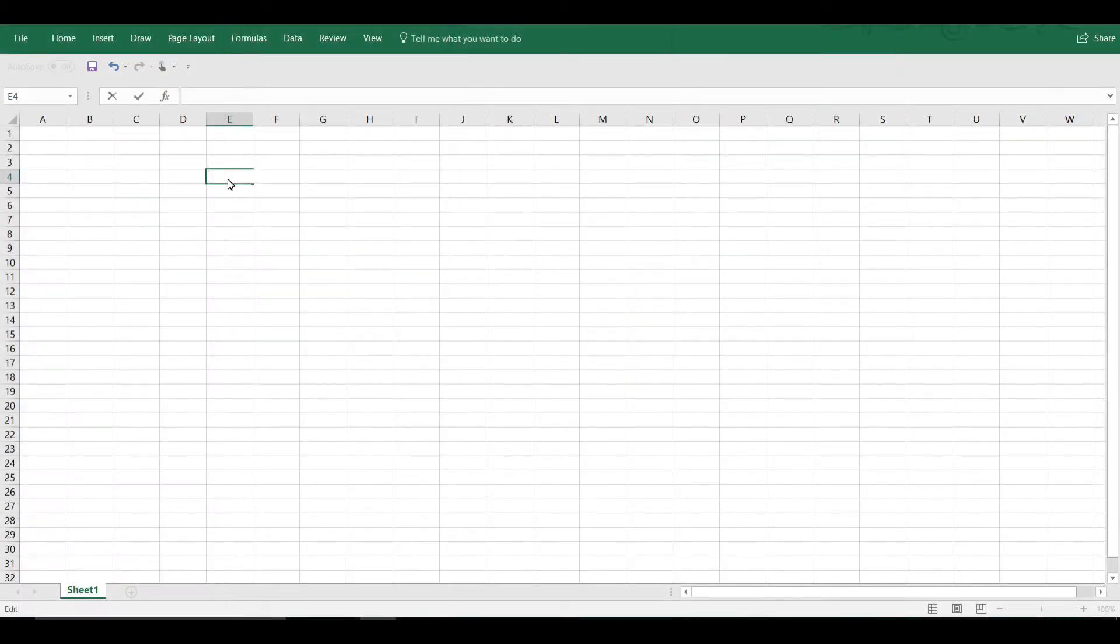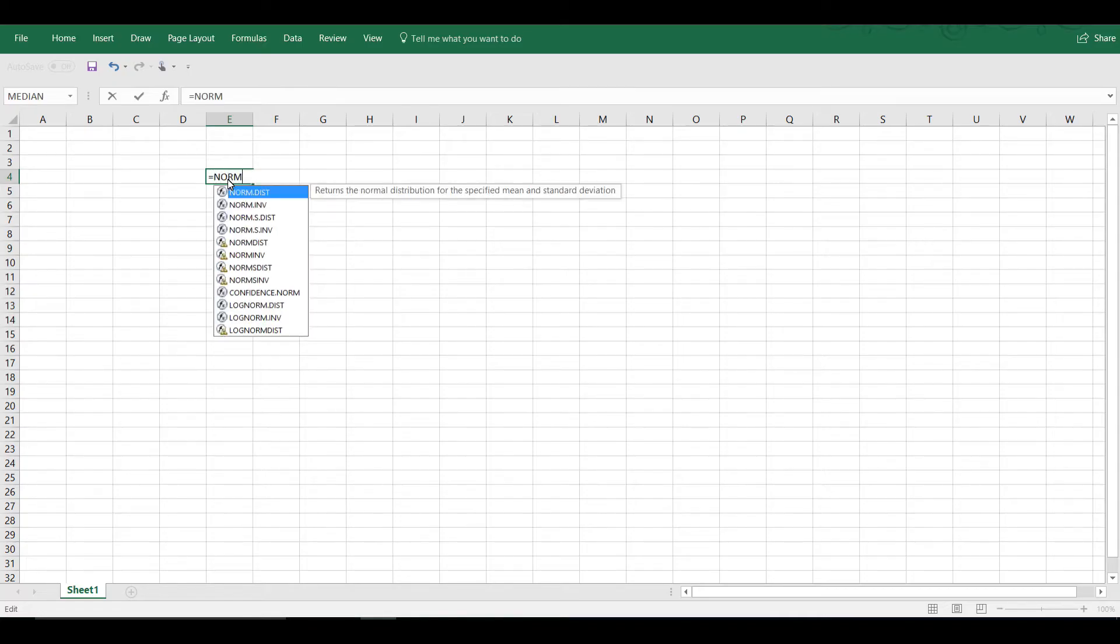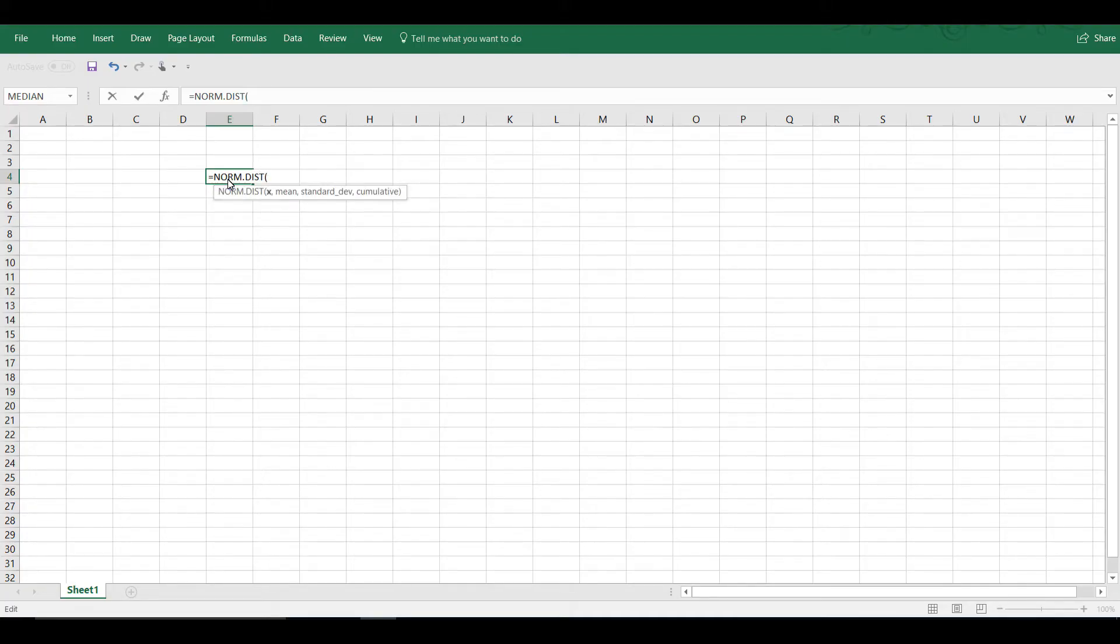In Excel, choose any empty cell and type in =NORM.DIST and then open parentheses, and as soon as you type in the open parentheses, you can see it shows you x, mean, standard deviation, and whether it is cumulative or not.